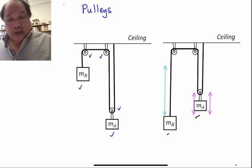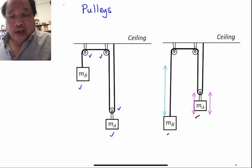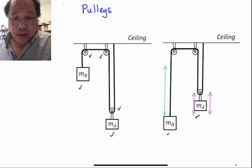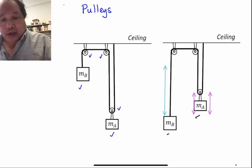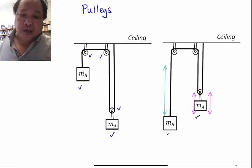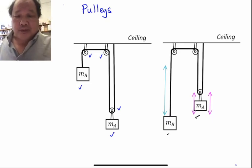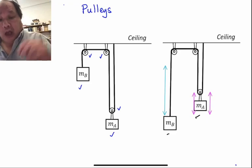The crux is that the amount of rope gained on the left side shown in blue must be exactly equal to the amount of rope lost on the right side shown in magenta.